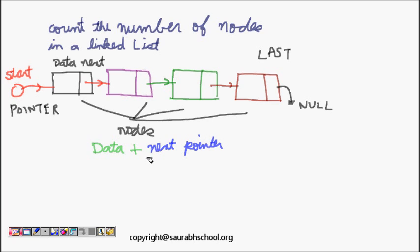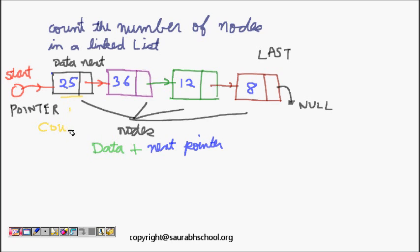Now the linked list has elements 25, 36, 12, and 8. To understand traversal, think of it as islands with bridges in between. You start from the shore and go to the first island using the start pointer. I have a variable called count, initially zero, and when I arrive at the first node I set count to one.